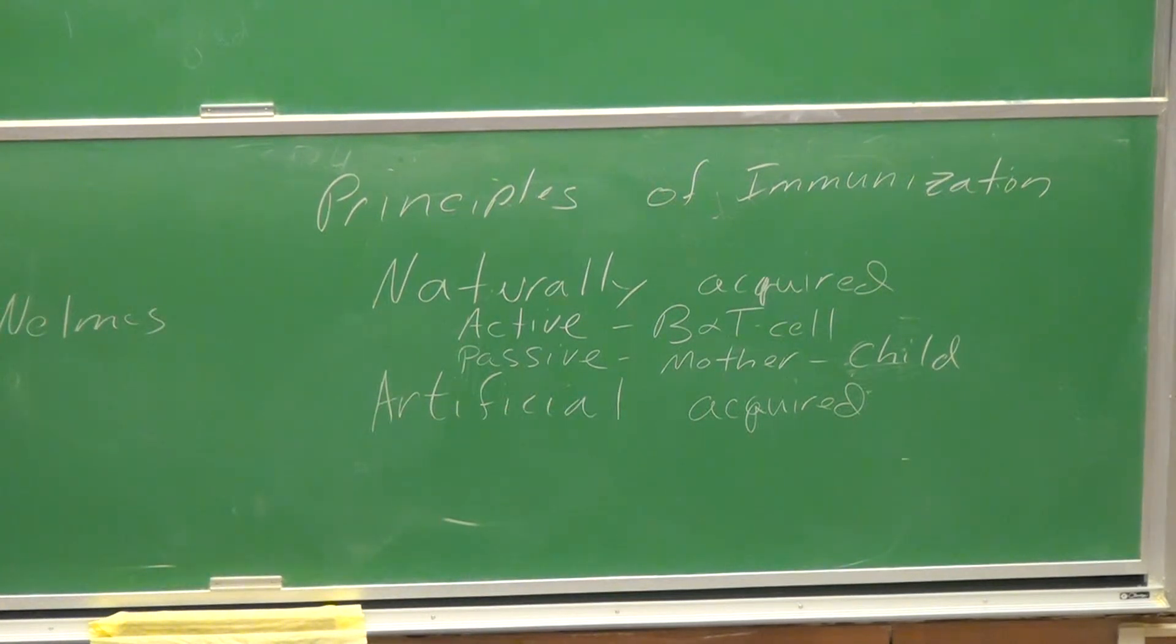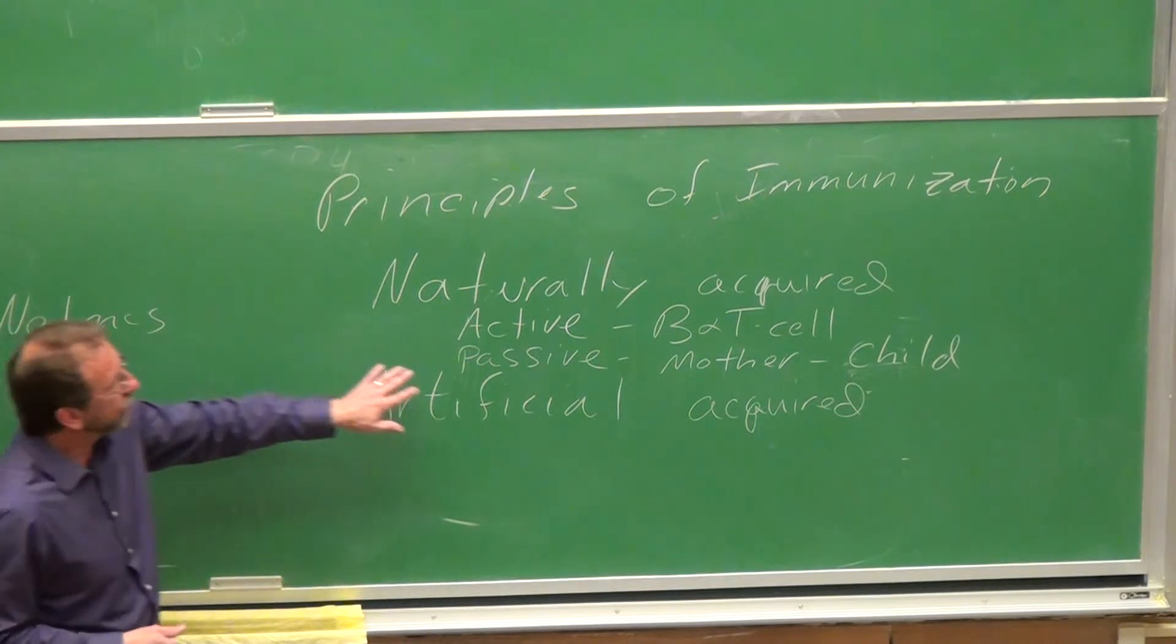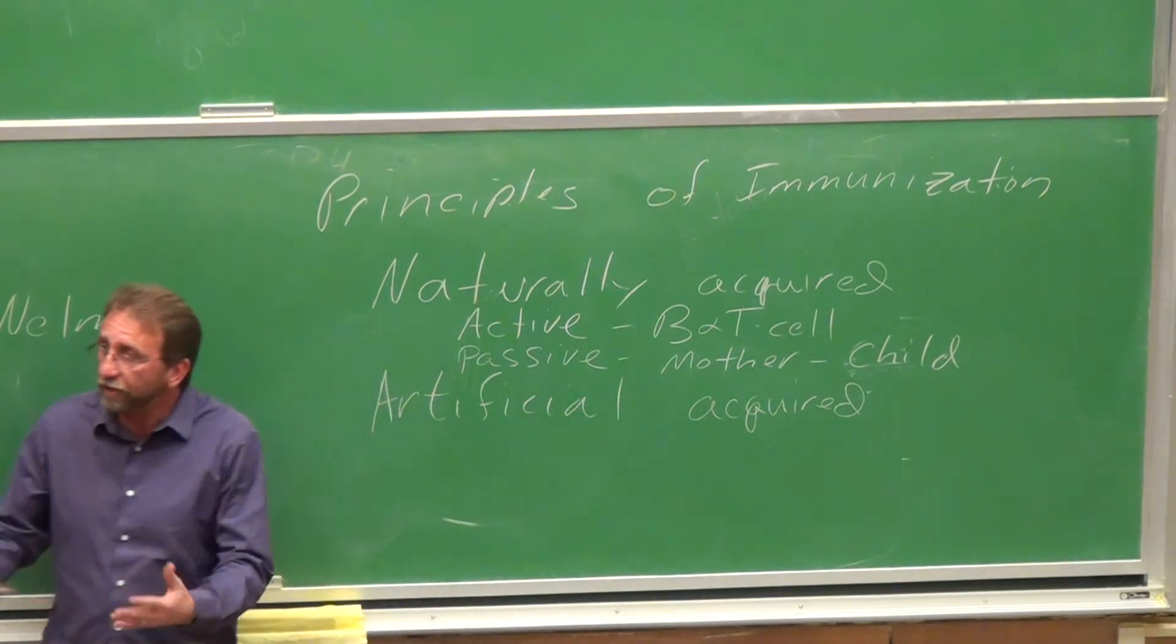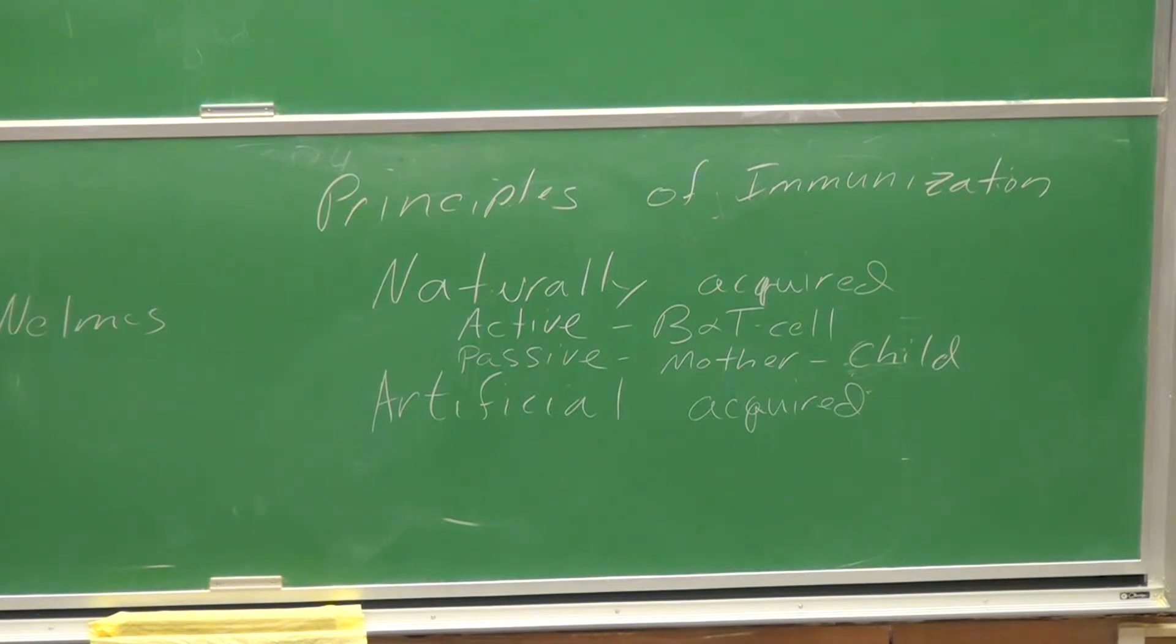But this is passive because the child isn't making the antibodies. The antibodies are coming from the mother. They're naturally acquired, but they're her antibodies, so they're going to be short-lived. They're not going to protect the child forever. In fact, they're going to eventually, probably within the first six months, be depleted.